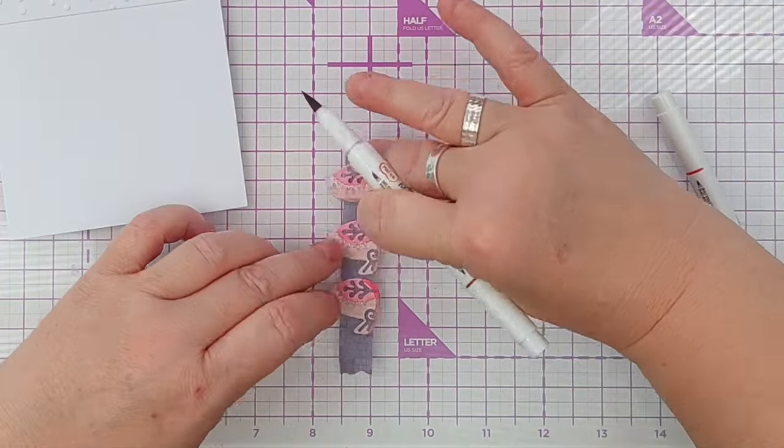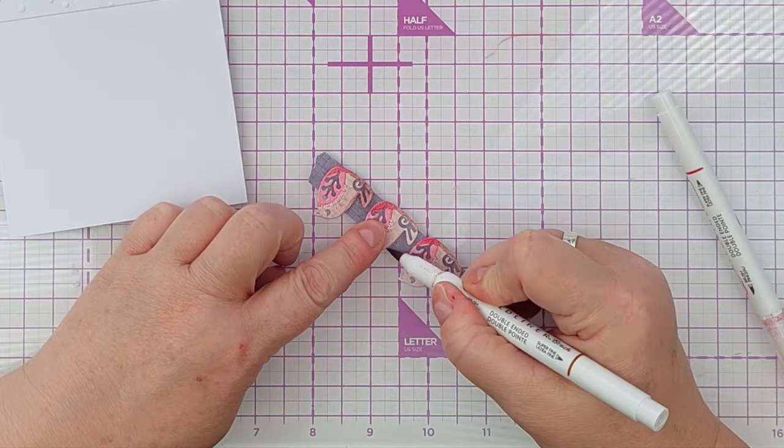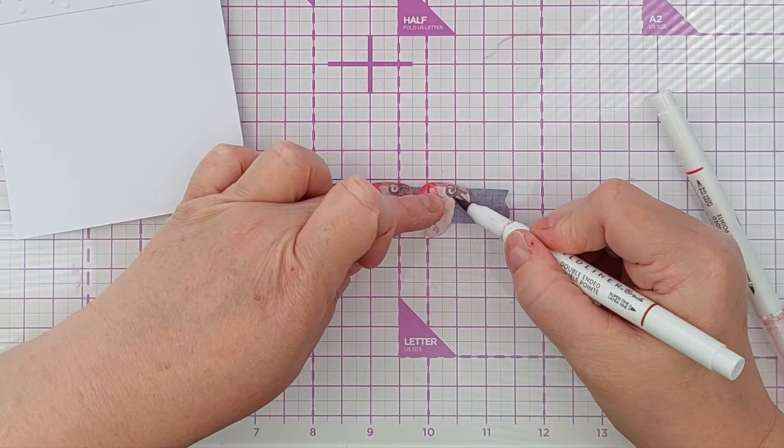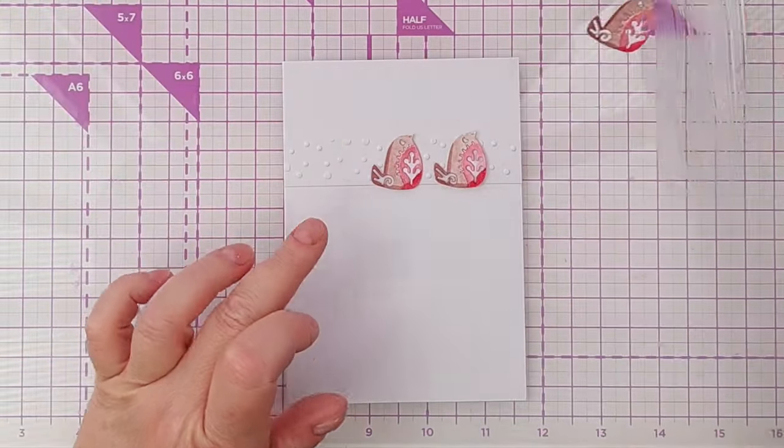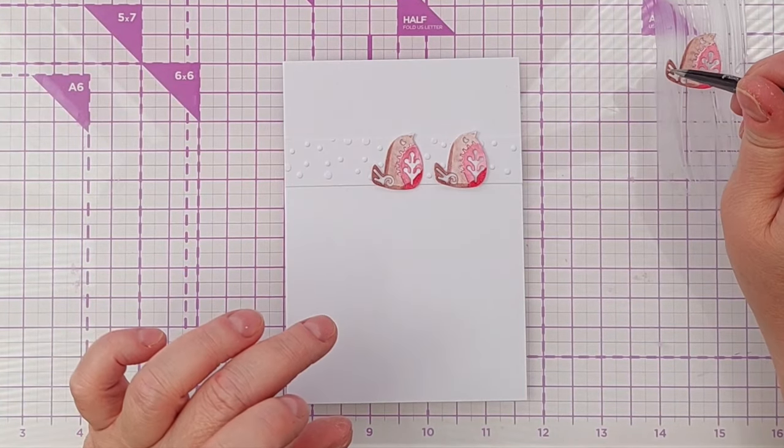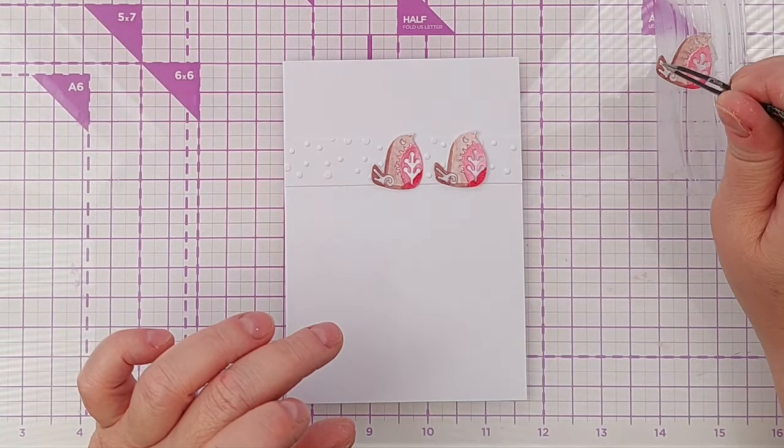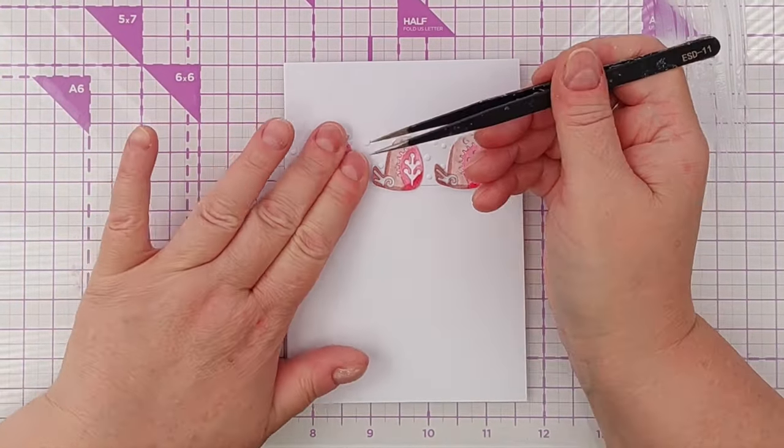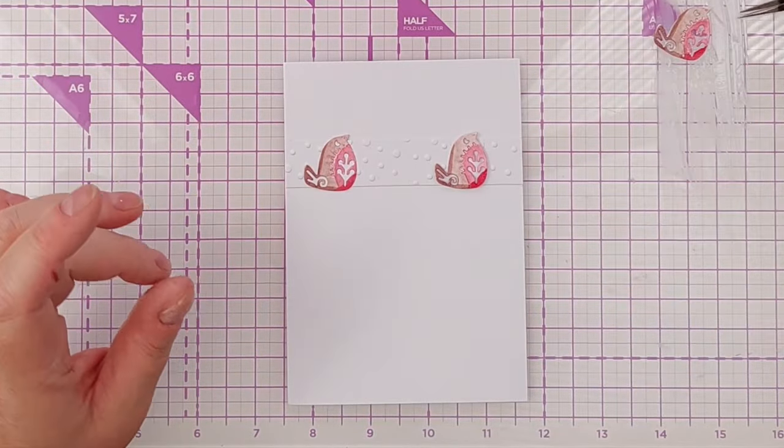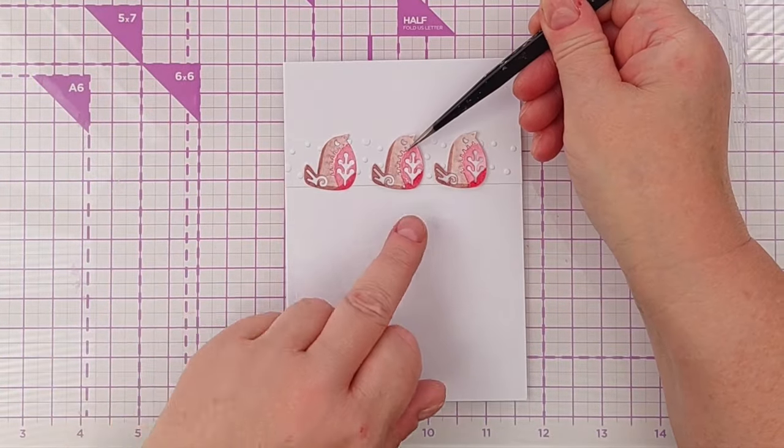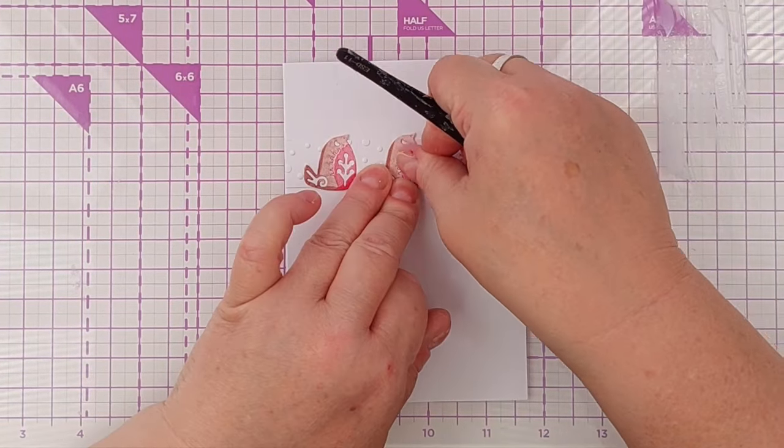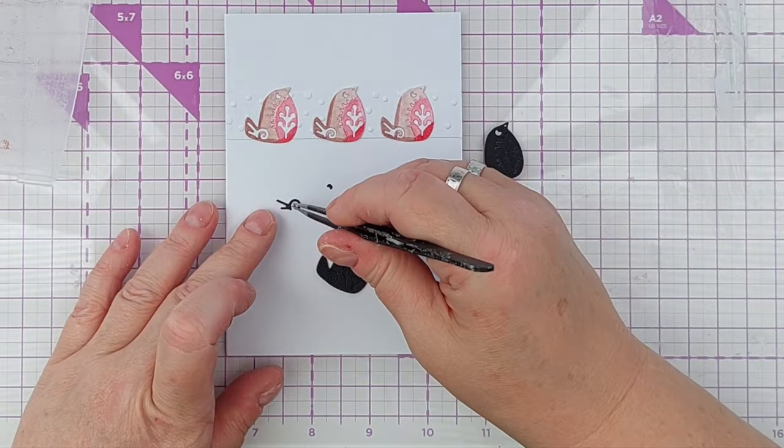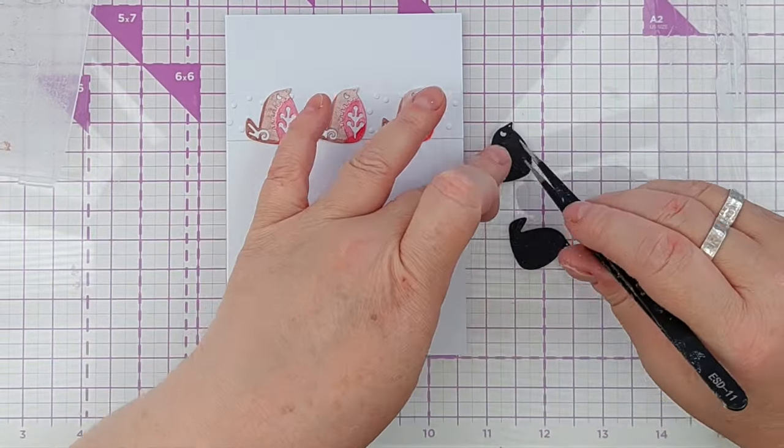Now I'm going to stick those on. I've got a bit of my high tack PVA glue again, spread it out on my glass mat, and I'll just dip the robins into it and put them on my snowy strip spread out equally.